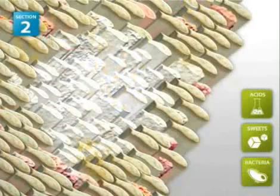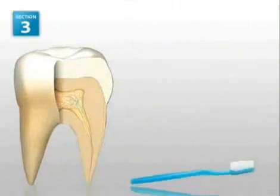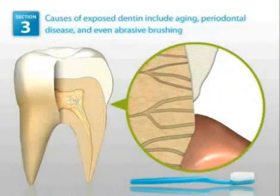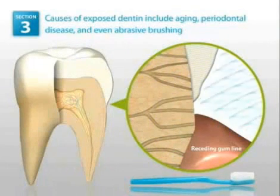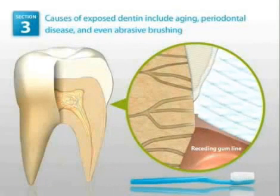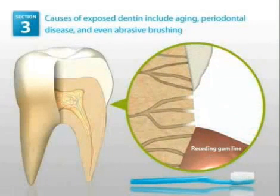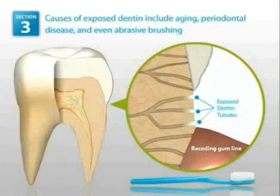Factors which can potentially damage enamel include mechanical abrasion and the effects of biofilm acids and caries. Mechanical abrasion often occurs as a result of using hard-bristle toothbrushes. This is evident in microphotographs of enamel, in which scratches, grooves, and in some cases exposed dentin are visible.